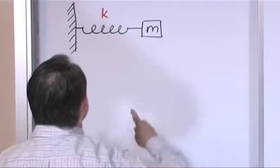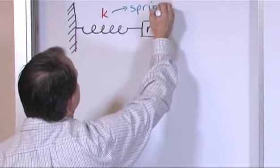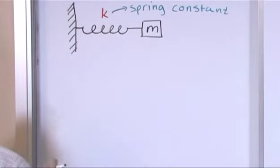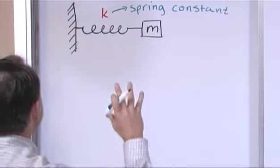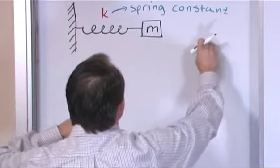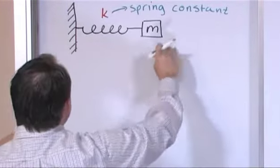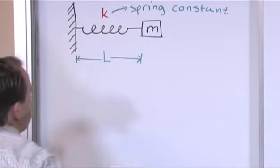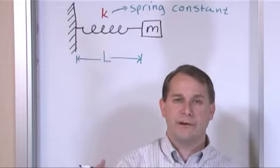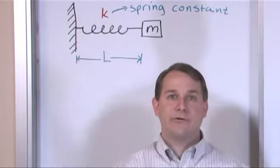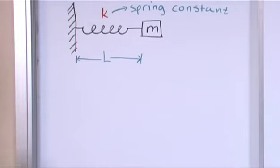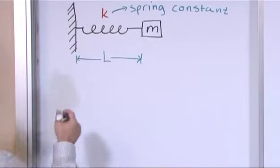Just to make sure everyone is on the same page: k is called the spring constant, and m is the mass of the block. In the rest position, the natural length of the spring is called L. If you leave the spring alone, it expands to its natural position. If you push or pull it from that natural rest position, it pushes back. So L is the natural rest length of the spring.